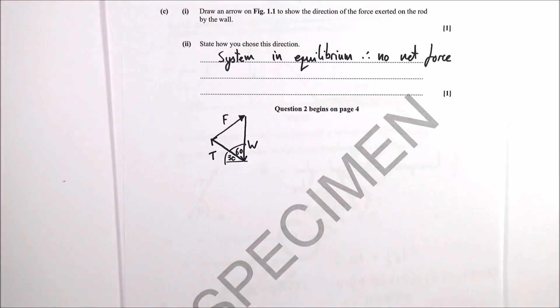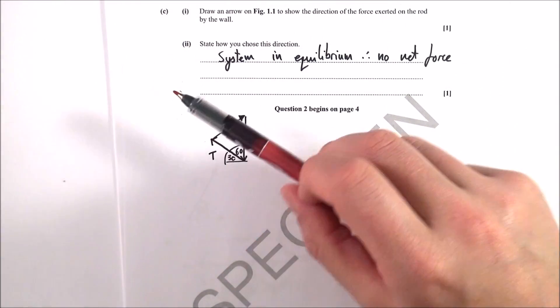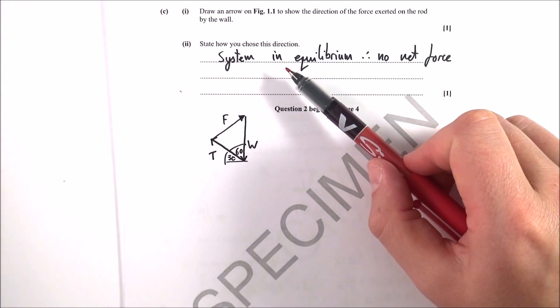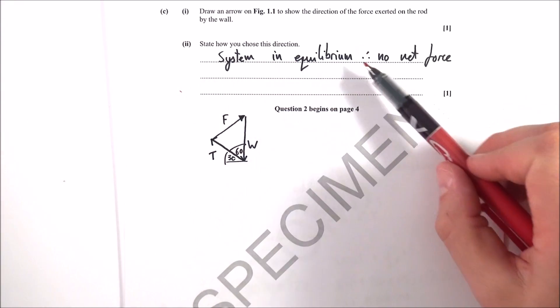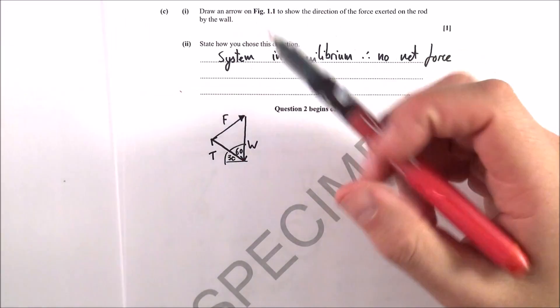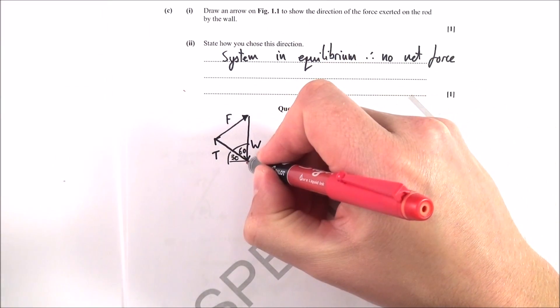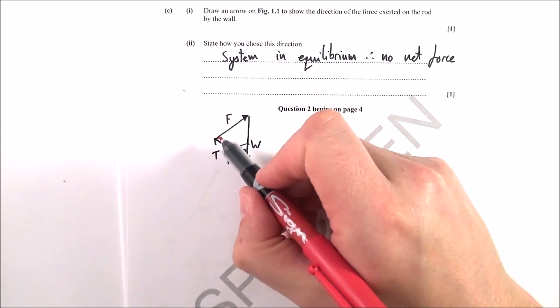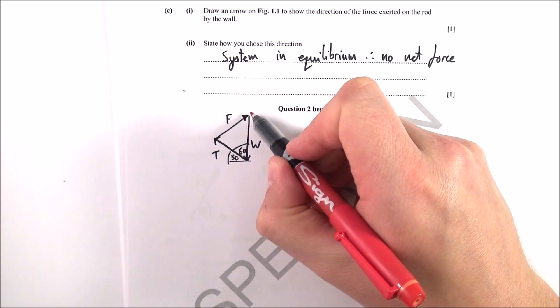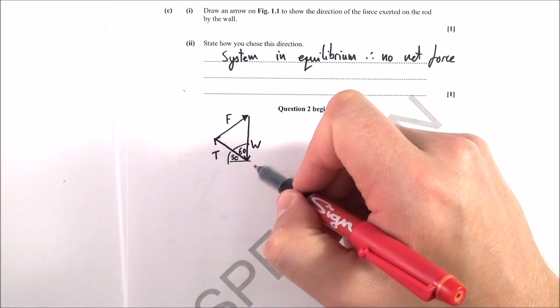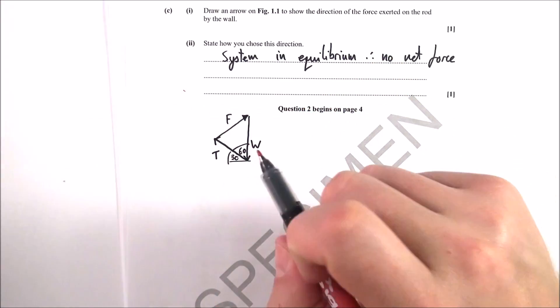Question d, sorry question c part two is explaining why that. Well first of all the system is in equilibrium and therefore there's no net force and what we then have is our triangle of forces. So you've got the weight acting down, you've got the tension acting here and therefore there must be a force acting to kind of join up that triangle. Effectively if all of these arrows join end to end there will be zero resultant force.